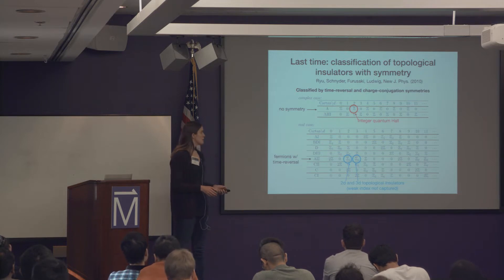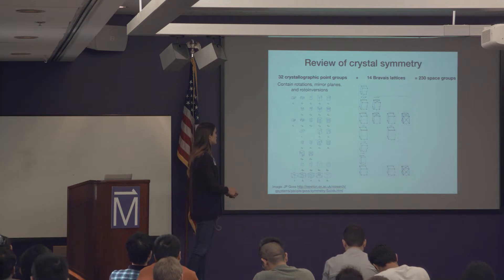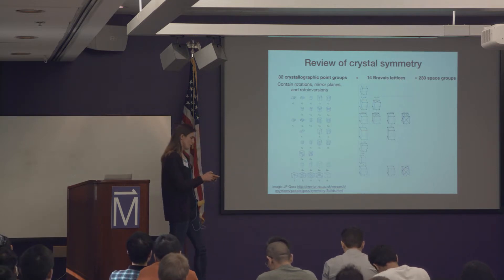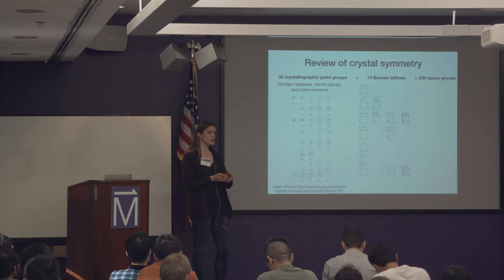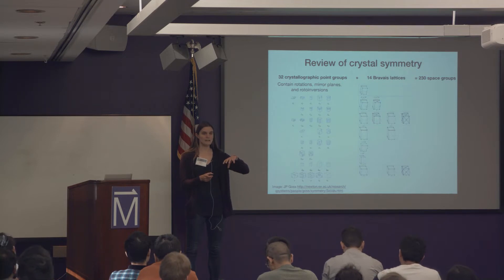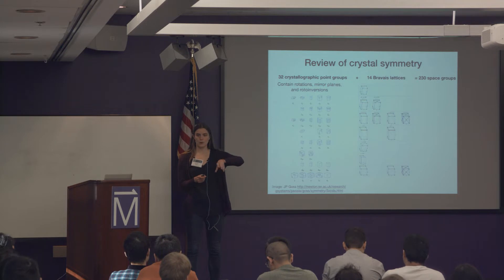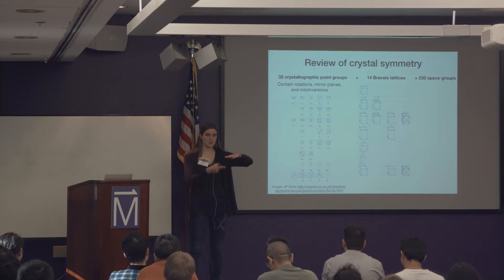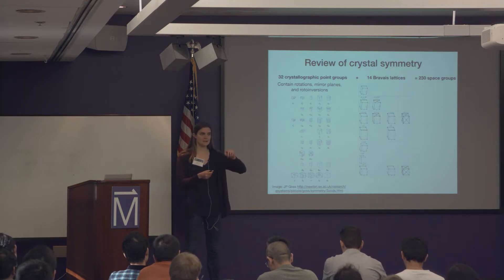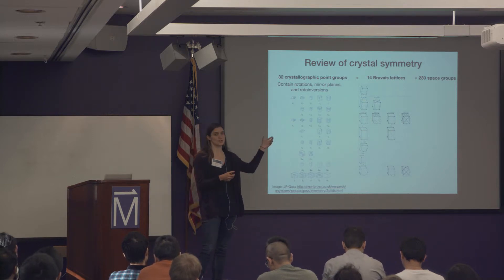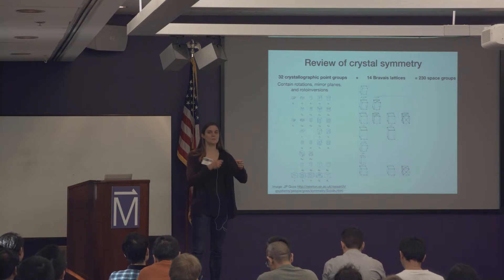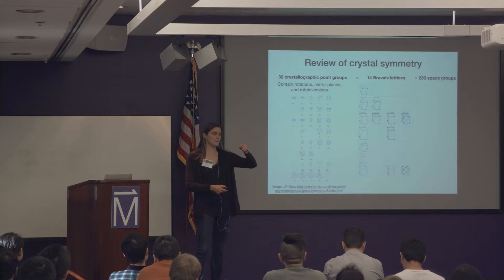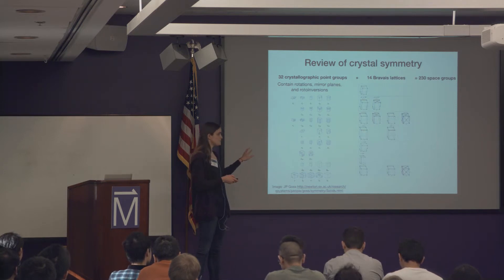In terms of crystal symmetry, first we have point groups. Point groups are operations that leave a single site unchanged. They come in a few types: rotations — a C4 rotation is rotation by 90 degrees, C3 is 120 degrees, and so on — mirror planes, where you pick some plane and reflect through it (maybe Z goes to minus Z but X and Y are unchanged), and inversion symmetry, which takes X to minus X, Y to minus Y, Z to minus Z.